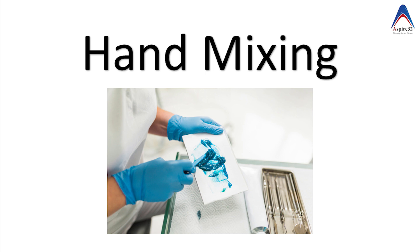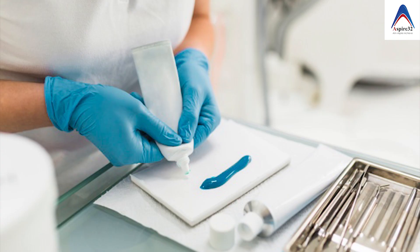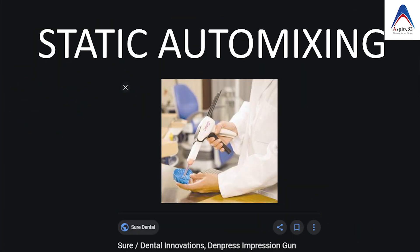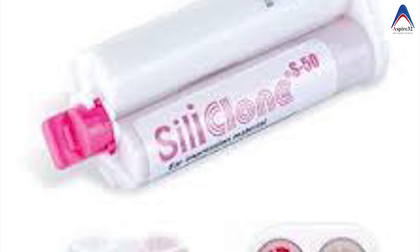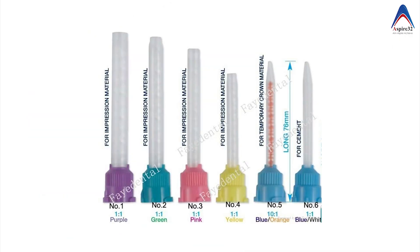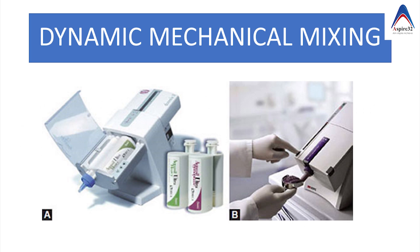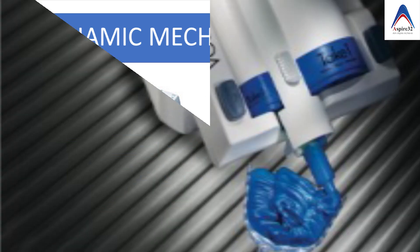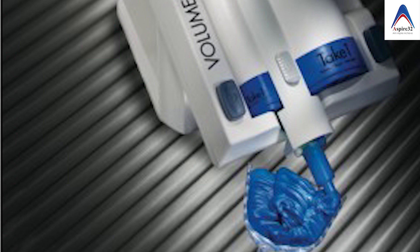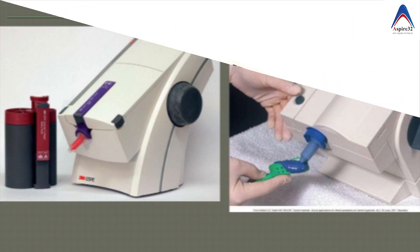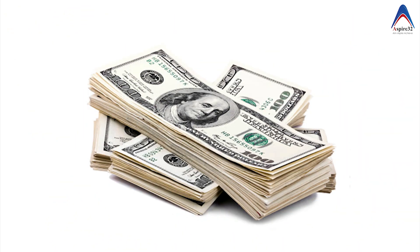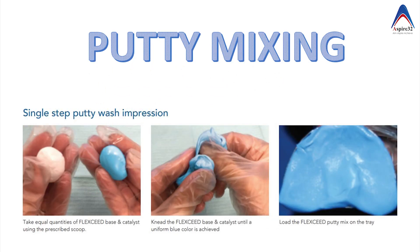Now let's learn about mixing of these impression materials. The first method is hand mixing where we take two pastes and mix with our hands. The second method is static auto mixing, using a cartridge with special tips where both pastes are uniformly mixed as material comes out. The third and best method is dynamic mechanical mixing where large packets of catalyst and base are loaded into a machine and you press a button to get a uniform consistency impression. However, automix machines are very expensive, and putty must always be mixed by hand.